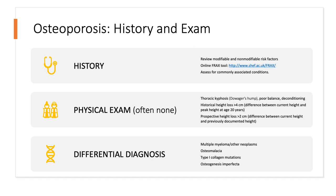How do we diagnose? We will look at our good old-fashioned history and physical exam. We are going to review the patient's modifiable and non-modifiable risk factors and use our FRAX tool to assess their score, and look for associated conditions. Many times on physical exam, there is no specific finding.